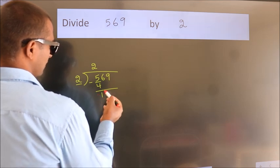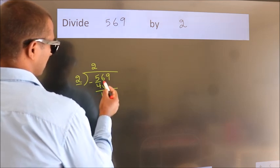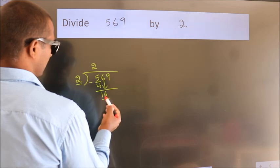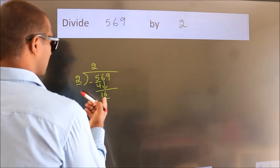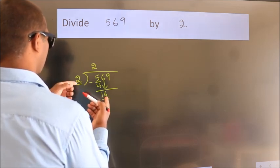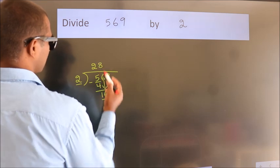After this, bring down the beside number. So 6 down. So 16. When do we get 16? In the 2 table, 2 8's 16.